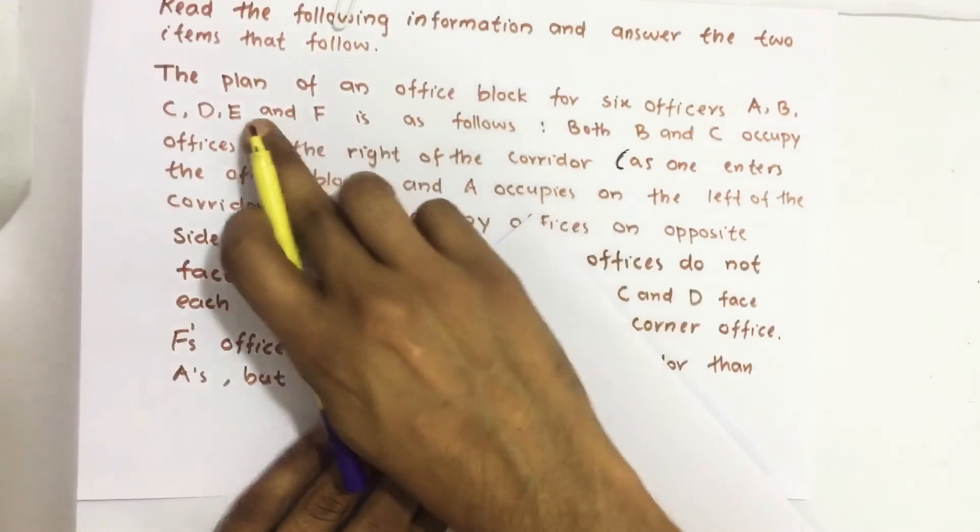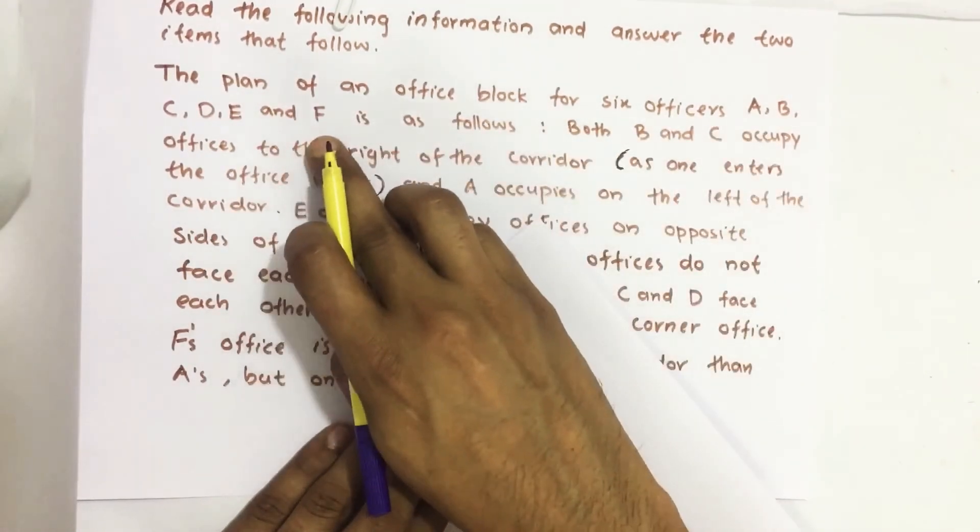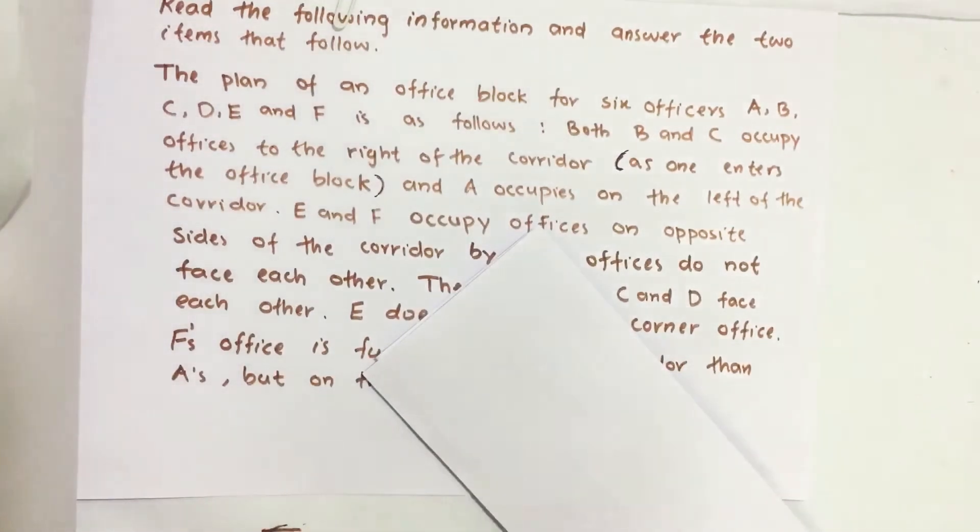So here the plan of an office block for six offices A, B, C, D, E and F. Six office rooms we have to draw.